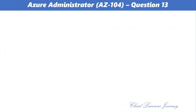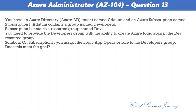Question number thirteen. You have an Azure Active Directory tenant named adatum and a subscription named Subscription One. adatum contains a group named Developers; Subscription One contains a resource group named Dave. You need to provide the Developers group the ability to create Azure Logic Apps in the Dave resource group. The proposed solution assigns the Logic App Operator role. Does this meet the goal? The correct answer is b) No — you would need the Logic App Contributor role. Logic App Operator lets you read, enable, and disable logic apps but not create or edit them, whereas Logic App Contributor lets you create and manage logic apps.